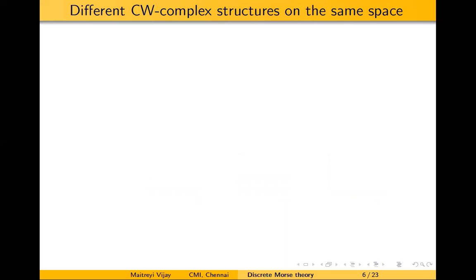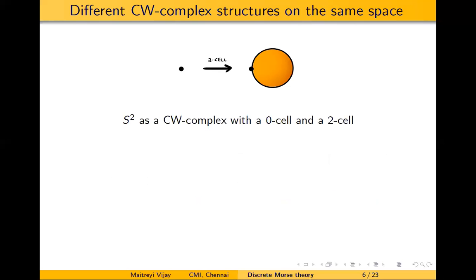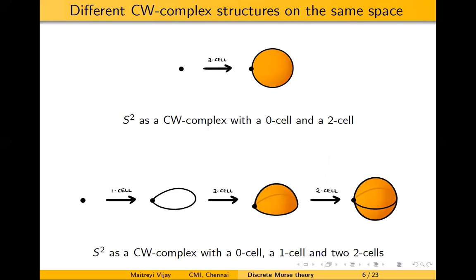Just as the same space could be represented in two ways as simplicial complexes, you can also represent it in two ways as different CW complexes. Taking the same example of S2: you can attach two cells to a point to get a sphere, or take a point, attach a one-cell to get S1, attach a disc on top to get a hollow hemisphere, and attach a disc at the bottom to get S2. Both are different CW complex structures giving the same topological space.